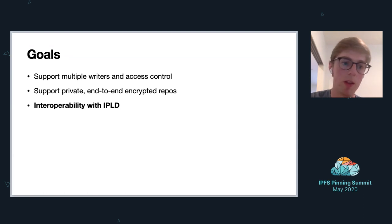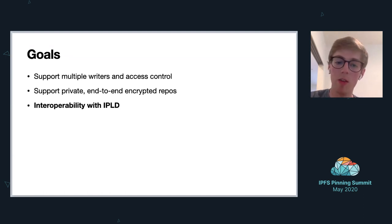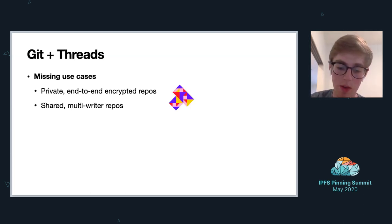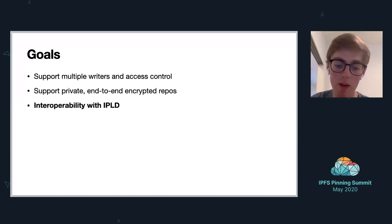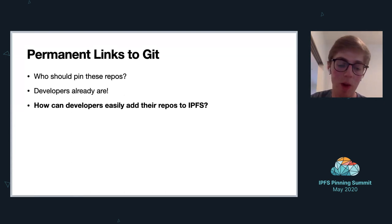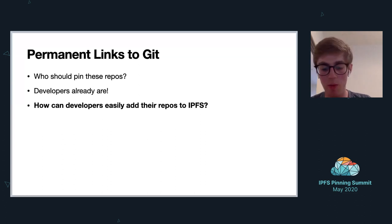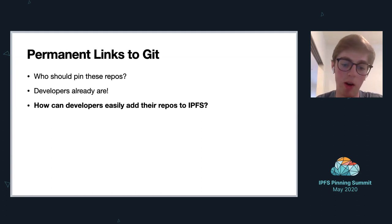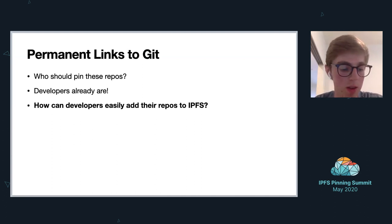A big thing that's missing is that Git repos aren't really being pinned. What's relevant to the Pinning Summit is that the end goal a lot of people have talked about is how can we traverse all these Git repos through IPLD. But a big problem is that these links are not really permanent because no one's really pinning these Git repos. So I've been thinking about why aren't people pinning these and how can they pin these?